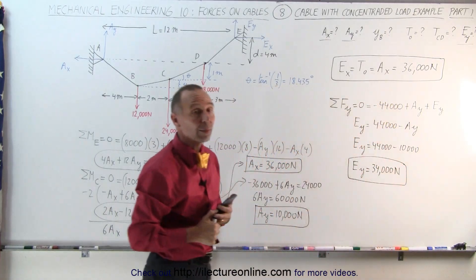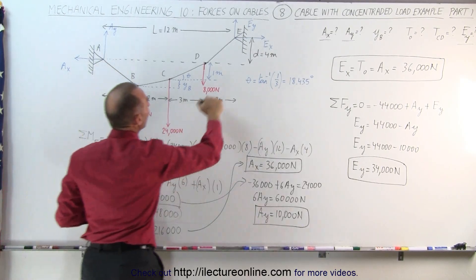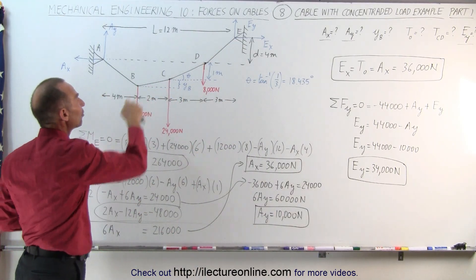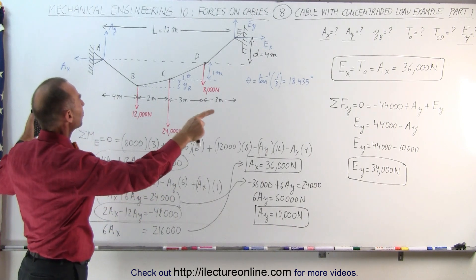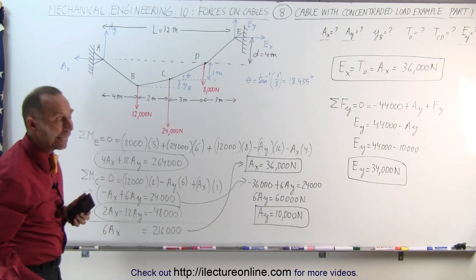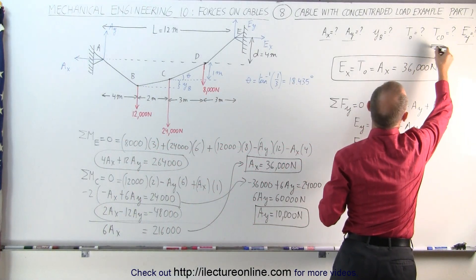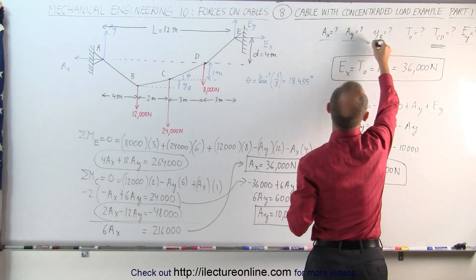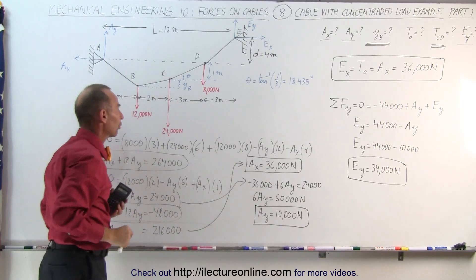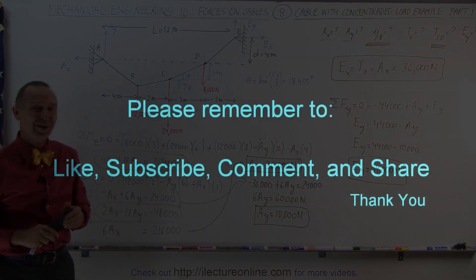We now have all the important components from part one: the two reactionary components at point A, the two reactionary components at point E, and the horizontal tension component T sub naught in any cable section, which equals the X components at both supports. In the next video, we'll solve the remaining unknowns — the tension in section C to D and the height difference between B and C.